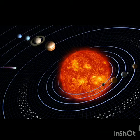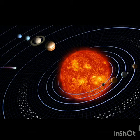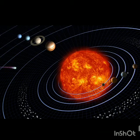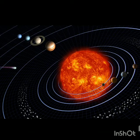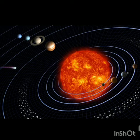Our next topic is the solar system and its planets. There are many galaxies in this universe. A galaxy is a collection of star systems. Our solar system is made up of planets. From our Sun, the planets in order are: Mercury, Venus, Mars, Jupiter, Saturn, Uranus, Neptune, and Pluto.